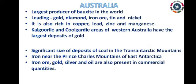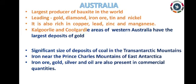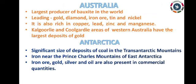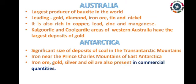The green diamond is the rarest diamond among all diamonds. Australia is known as the largest producer of bauxite in the world. Kalgoorlie and Coolgardie have the largest deposits of gold. Australia is also a leading producer of gold, diamond, iron ore, tin, and nickel, and is rich in copper, lead, zinc, and manganese. In Antarctica, coal is found in the Transantarctic Mountains and iron near the Prince Charles Mountains of East Antarctica. Iron ore, gold, silver, and mineral oil are also present in commercial quantities in Antarctica.